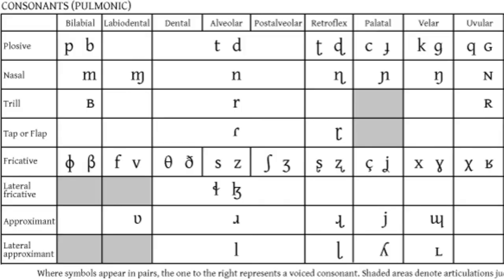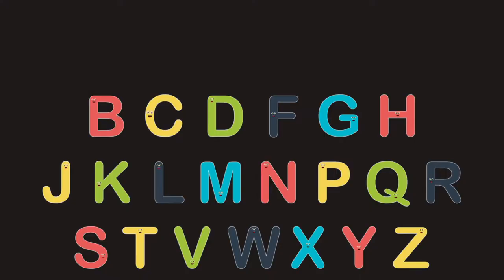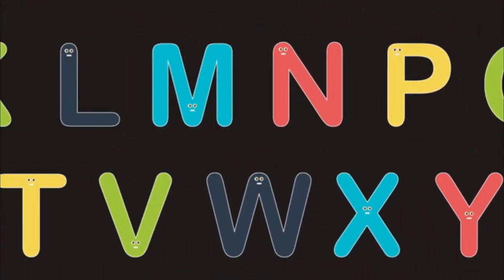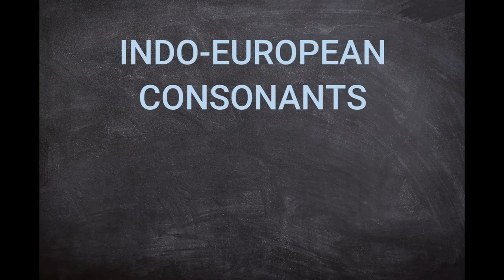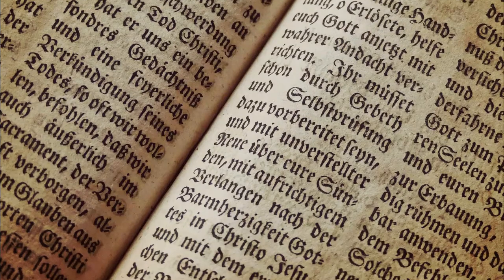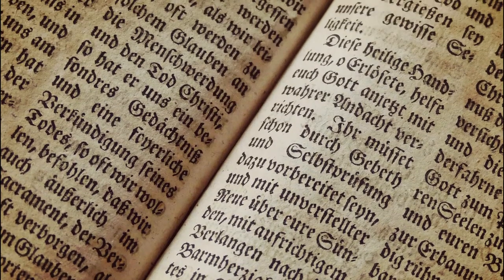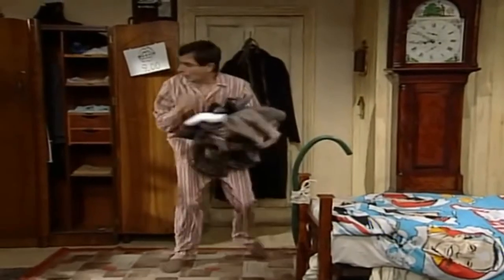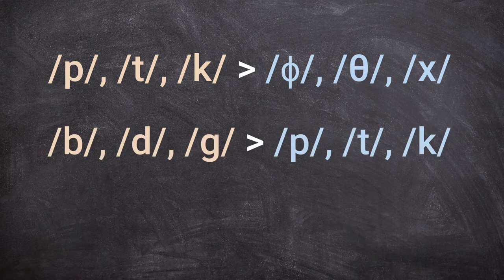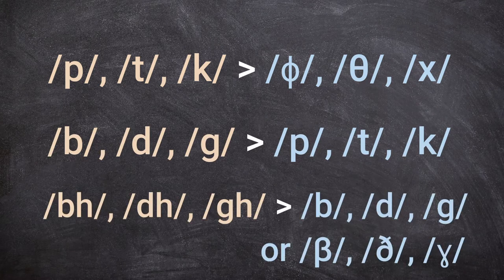Last time we talked about consonants. We said that the consonants in the Germanic language were the result of a specific development of Indo-European sounds called the first consonant shift. Because of the tendency of Germanic speakers to start using the glottis later than expected, voiceless plosives became voiceless fricatives, voiced plosives became voiceless plosives, and aspirated consonants became simple consonants without aspiration.